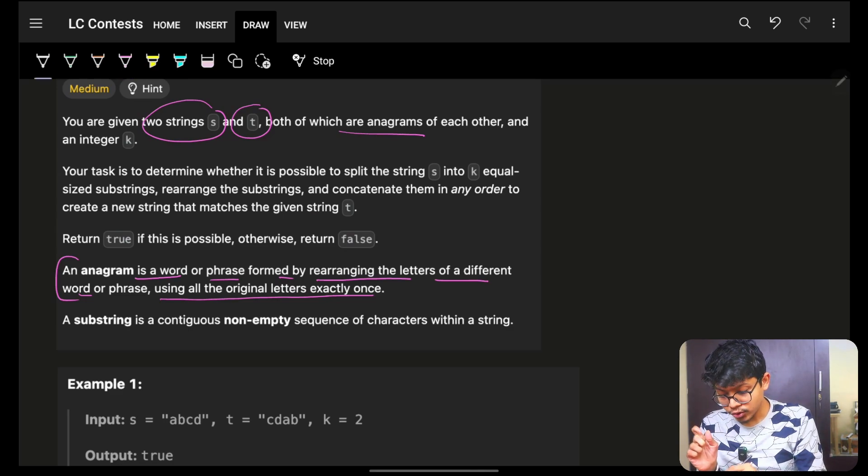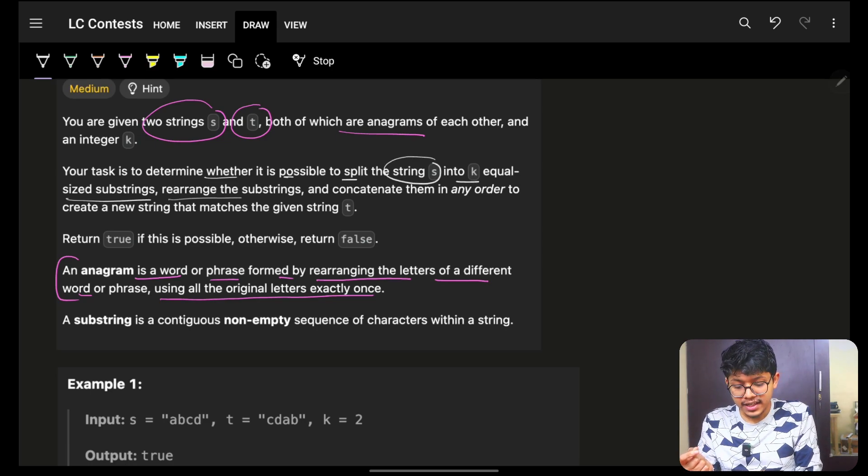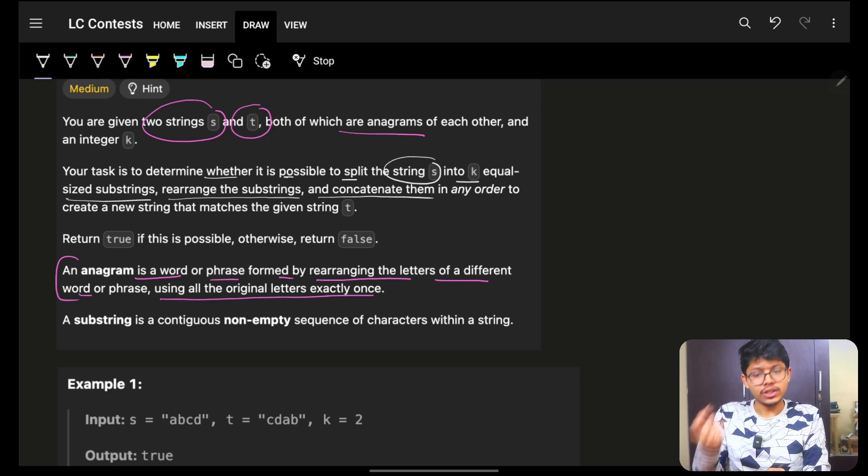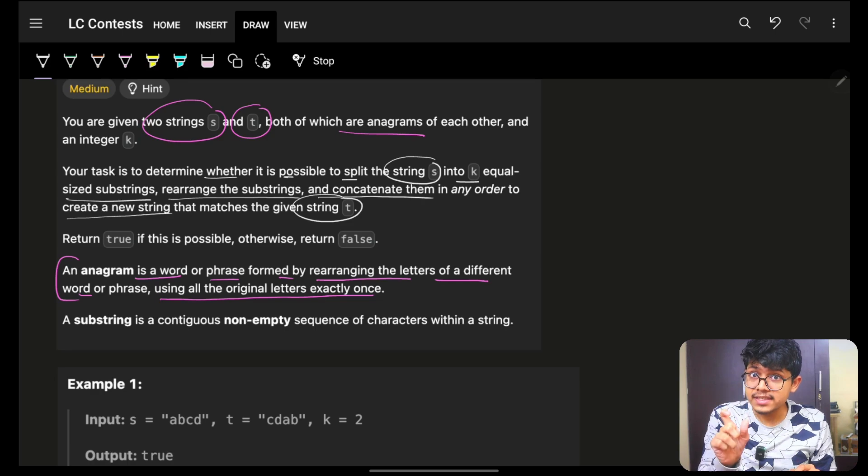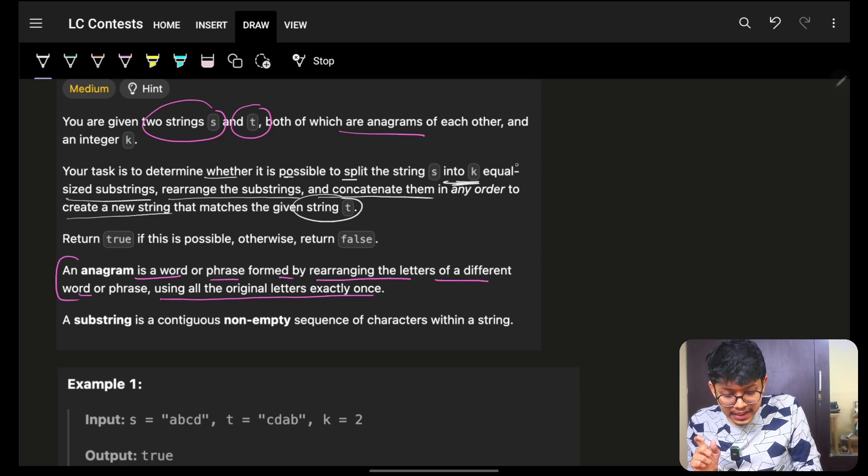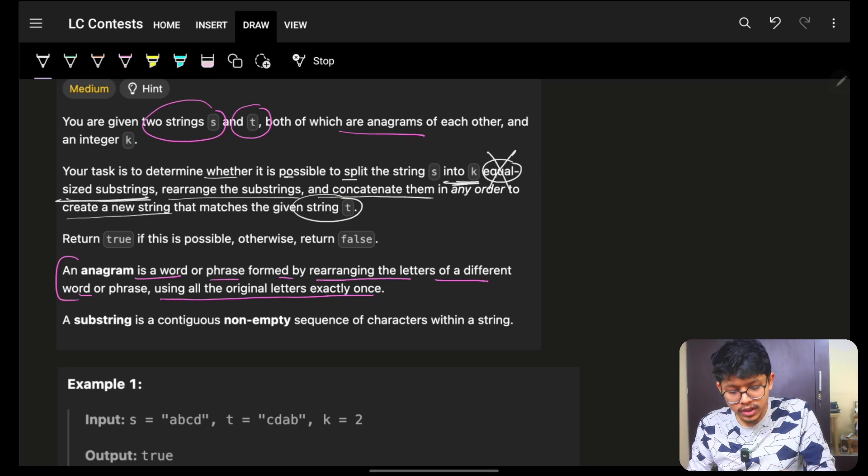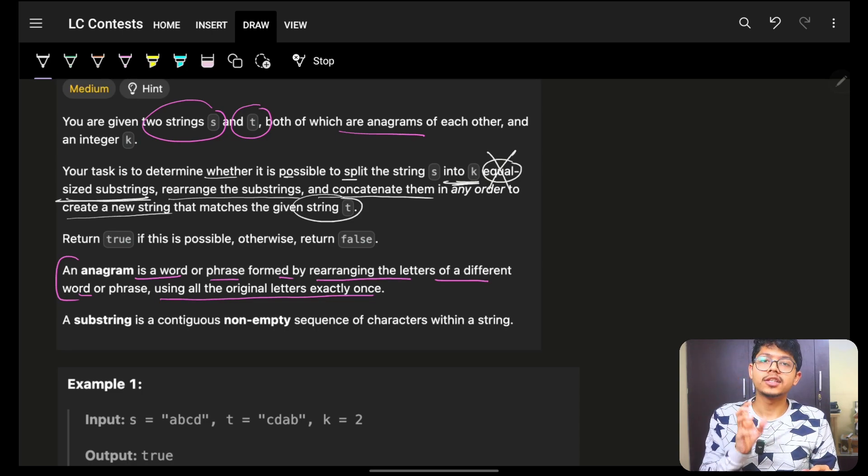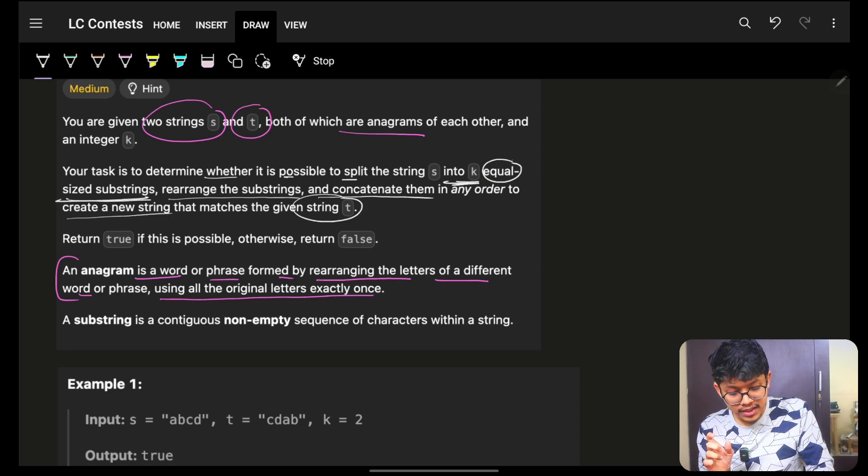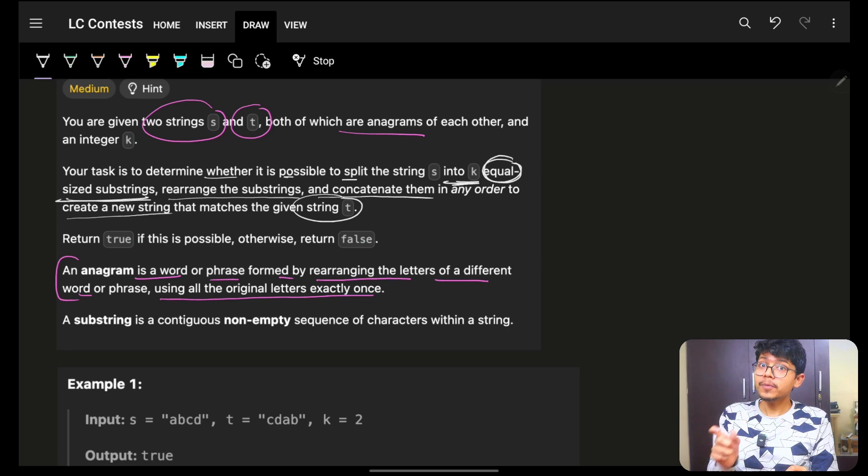Now, my task is to determine whether it is possible to split S into K equal size substrings, rearrange those substrings, concatenate them in any order, and am I able to achieve the string T? The biggest and most important thing in this problem statement is into K equal size substrings. People who miss equal get very confused on how hard this problem is.